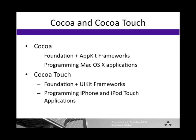Before we do that, let's have a little background and learn some terminology. You've heard about Cocoa and Cocoa Touch. Cocoa is basically a name given to a combination of two frameworks: the Foundation Framework, which you've learned about in Part 1 of this course, and the AppKit Framework. The AppKit is responsible for presenting the UI to the user for a Cocoa application and handling all the events associated with that. Cocoa is used for programming native Mac OS X applications — apps like Safari, iTunes, and Mail would be written using Cocoa.